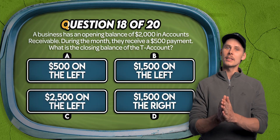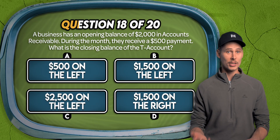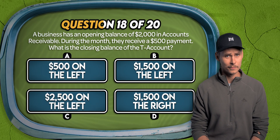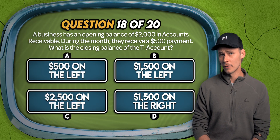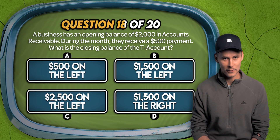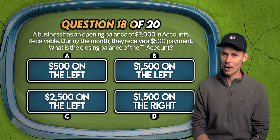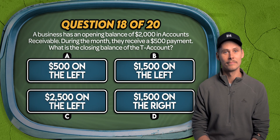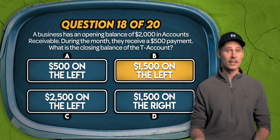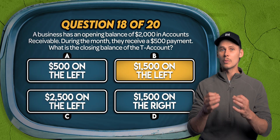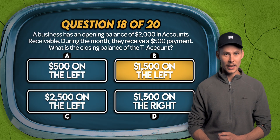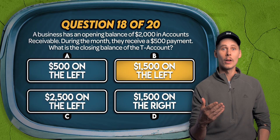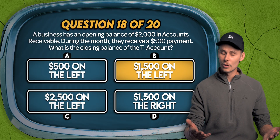Question 18. A business has an opening balance of $2,000 in accounts receivable. During the month, they receive a $500 payment from a customer. What's the closing balance of the T-account? Is it $500 on the left, $1,500 on the left, $2,500 on the left, or $1,500 on the right? It's B. Accounts receivable is an asset — a normal debit account. It starts with a $2,000 balance on the left. When the business receives the $500 payment, they credit the right side to reduce the amount owed, leaving a $1,500 balance on the left or the debit side.